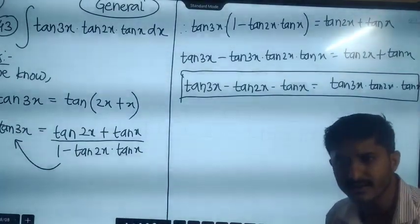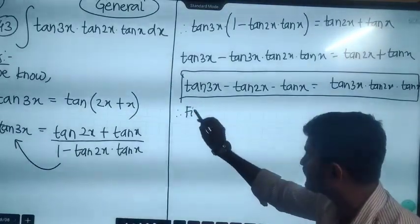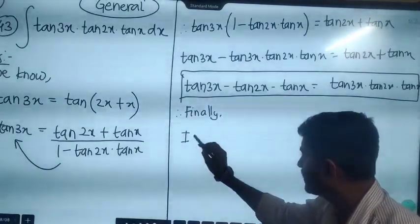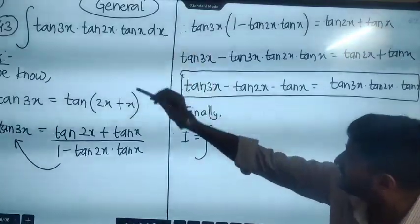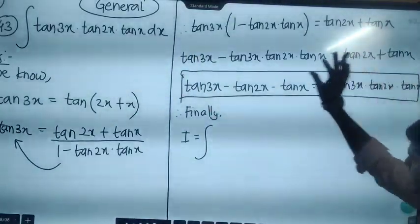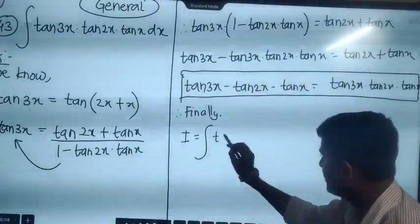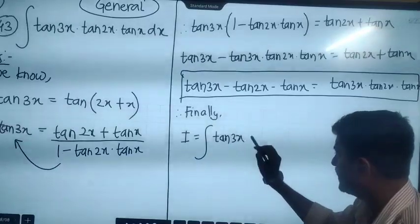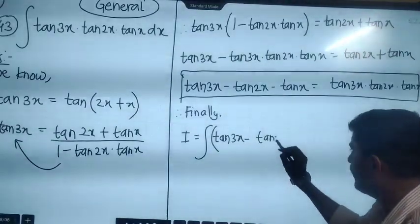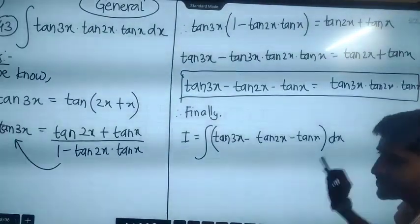This is the key result. Therefore, finally, what we can write is: I equals the integration of tan of 3x minus tan of 2x minus tan of x, all with respect to x.